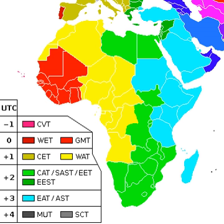Central Africa Time is used by the following countries: Burundi, Botswana, Egypt (which observes Eastern European Time), the Democratic Republic of the Congo, Libya, and Malawi.